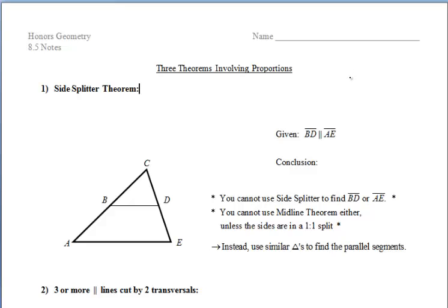Let's first start off with the side splitter theorem. The side splitter theorem states that if a line is parallel to one side of a triangle and intersects the other two sides, it divides those two sides proportionally.